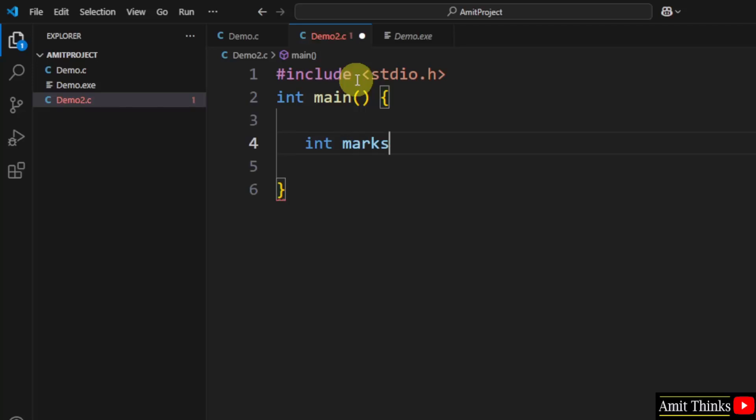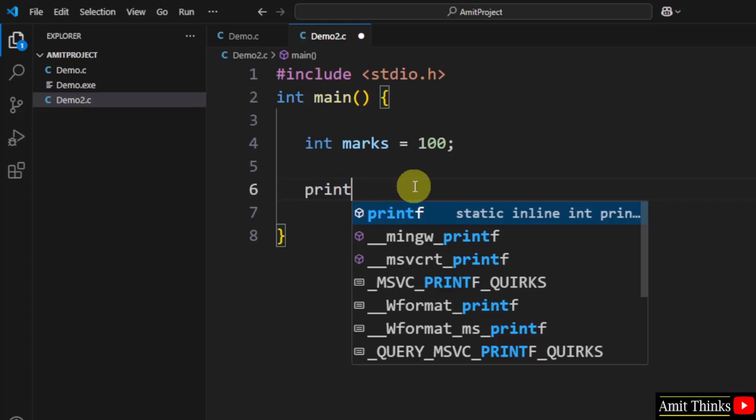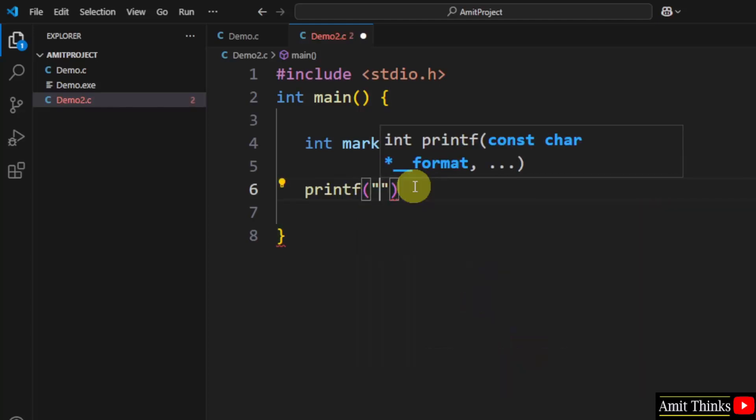Marks. We have added the integer data type and variable marks. I will give it a value, let us say 100. And now I will print it using the printf method. Under the quotes, mention whatever text you want. Let us say maximum marks.